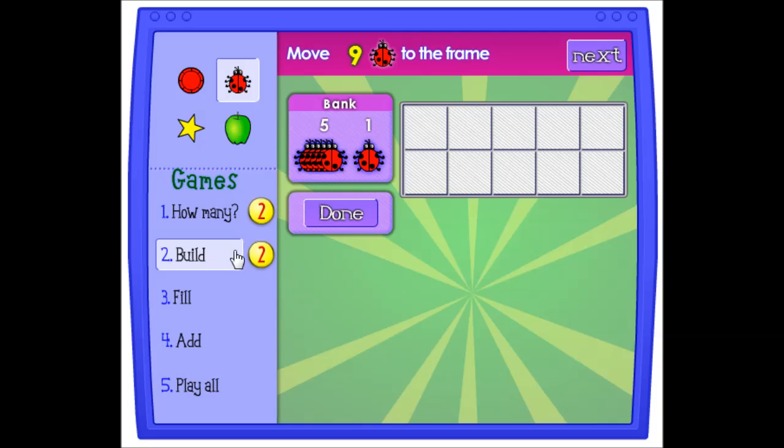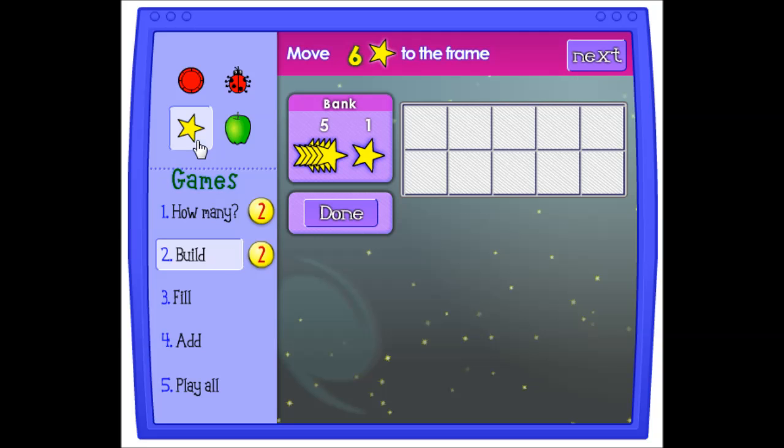Move nine bugs to the frame. You can also use stars. Move six stars to the frame. Done.